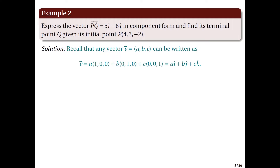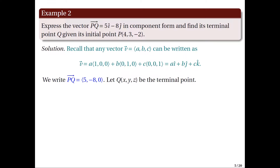Vector V = A·î + B·ĵ + C·k̂. Hence, our given vector PQ = 5î − 8ĵ + 0k̂ has components (5, −8, 0). We can find the coordinates of the terminal point by equating each component to the difference of the corresponding coordinates of the terminal and initial points. If (X, Y, Z) is the terminal point, then the first component gives 5 = X − 4.